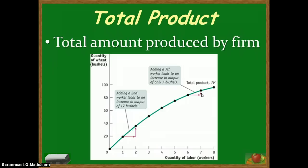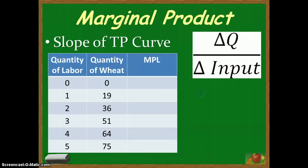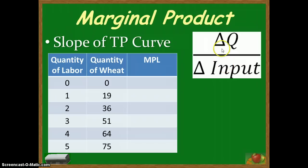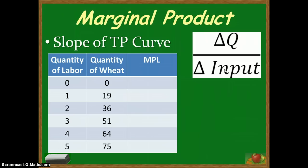This begins to demonstrate another concept, which is marginal product. Like all marginal things we talk about, it is a change in one variable with a change in the other. In this case, it's a change in quantity given a change in input — how much wheat do I produce with an additional worker. We call that the marginal product, in this case the marginal product of labor, because that's the input going into it. The marginal product turns out to be the slope of the total product curve.